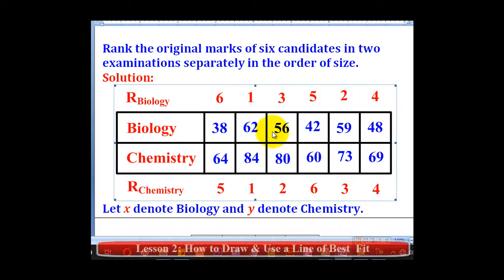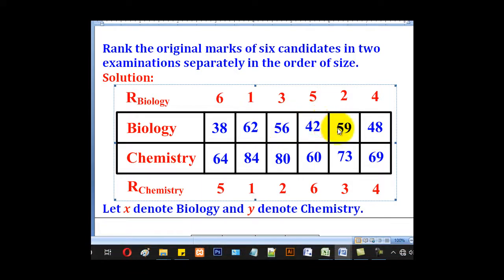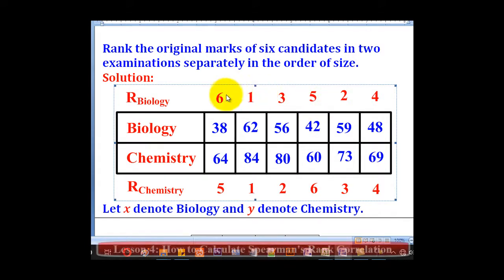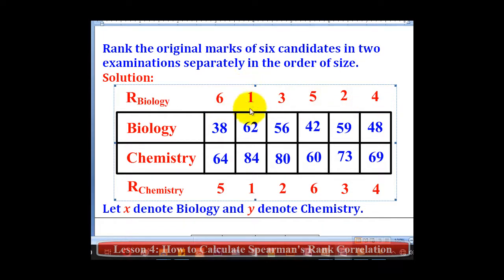We shall look at the highest. The highest of these is 68, so it will take rank 1. Then the second largest is 59, it will take rank 2. Third is 56, fourth is 48, fifth is 42, and lastly 6th is 38. So these are the ranks of biology.